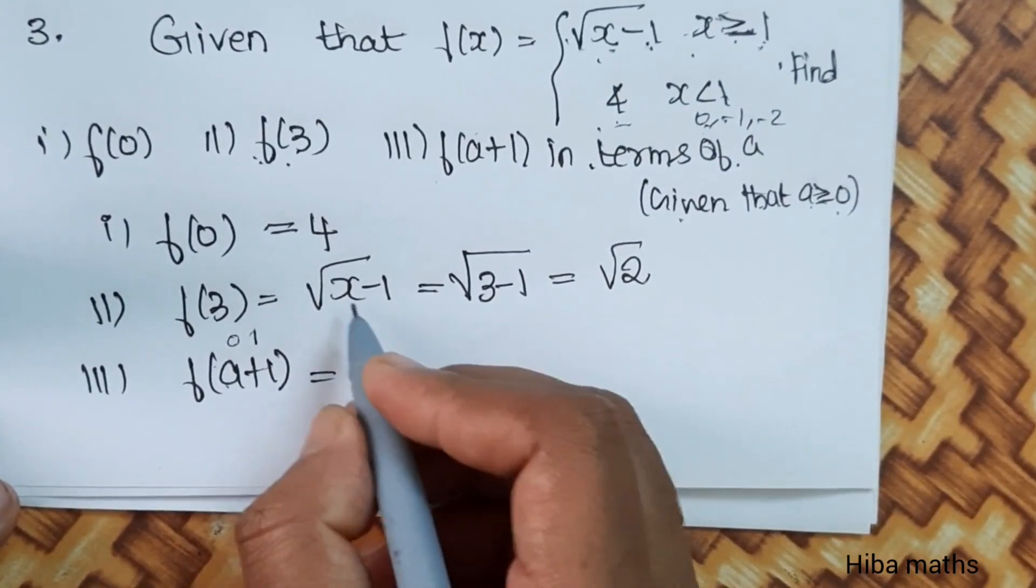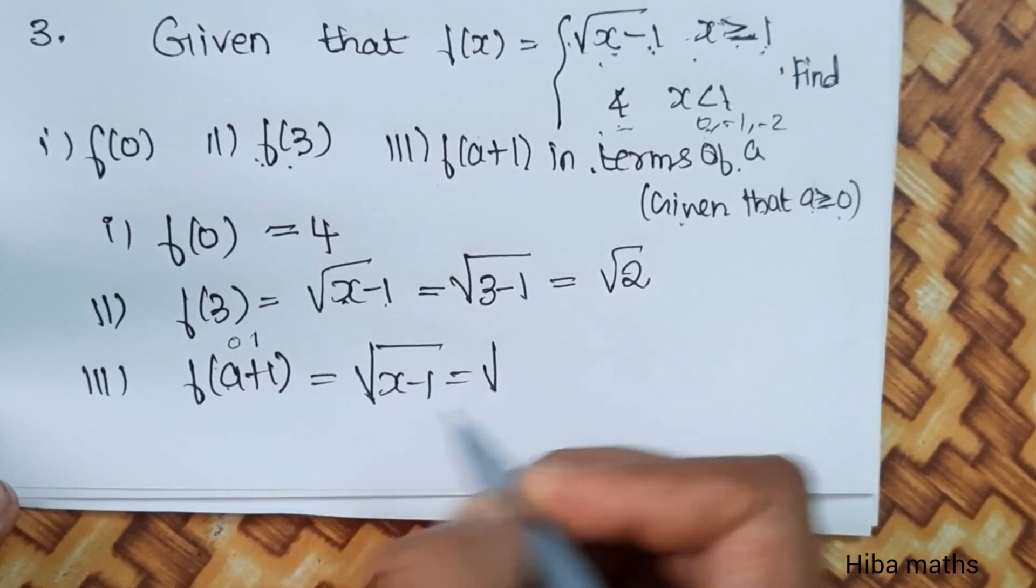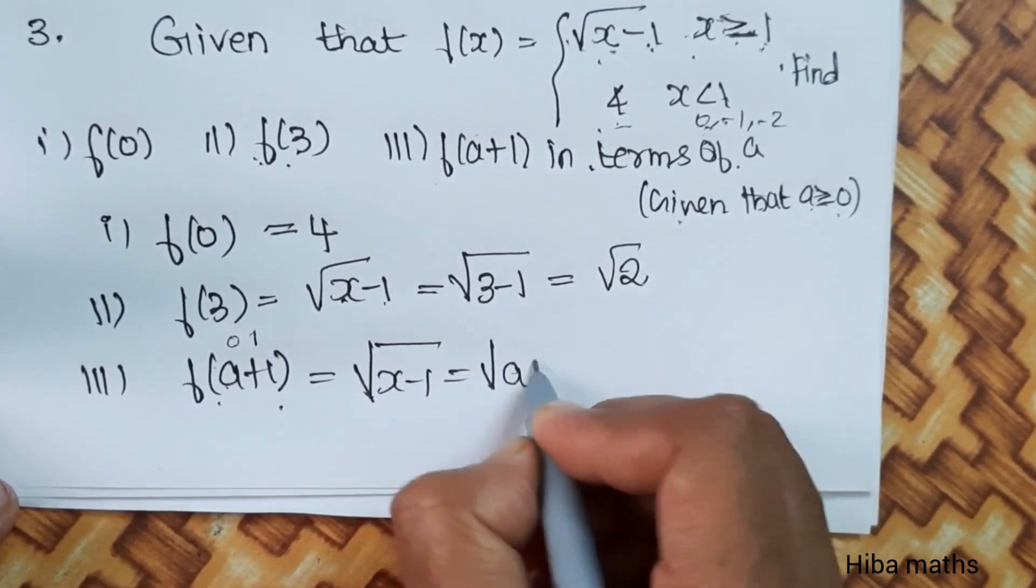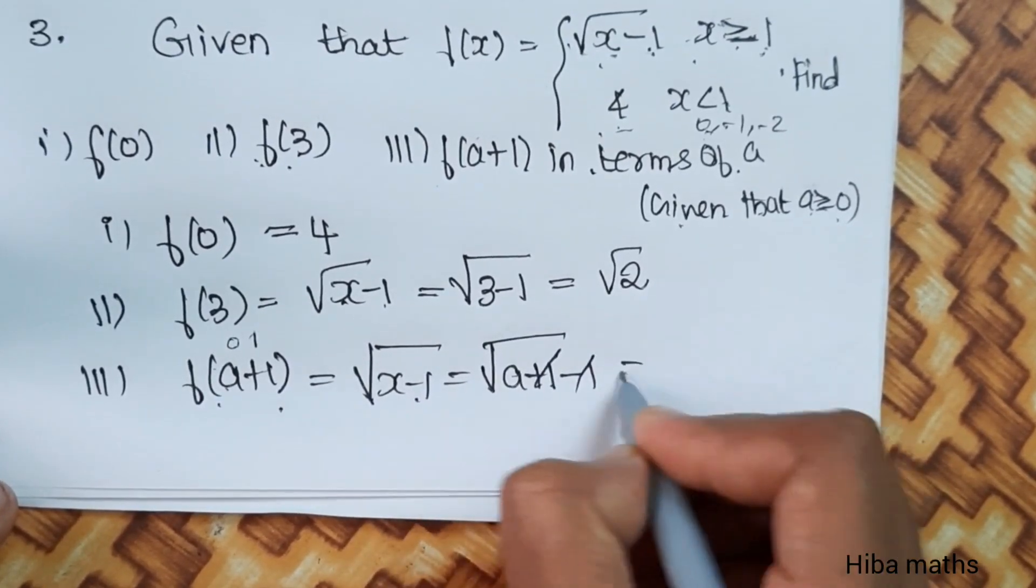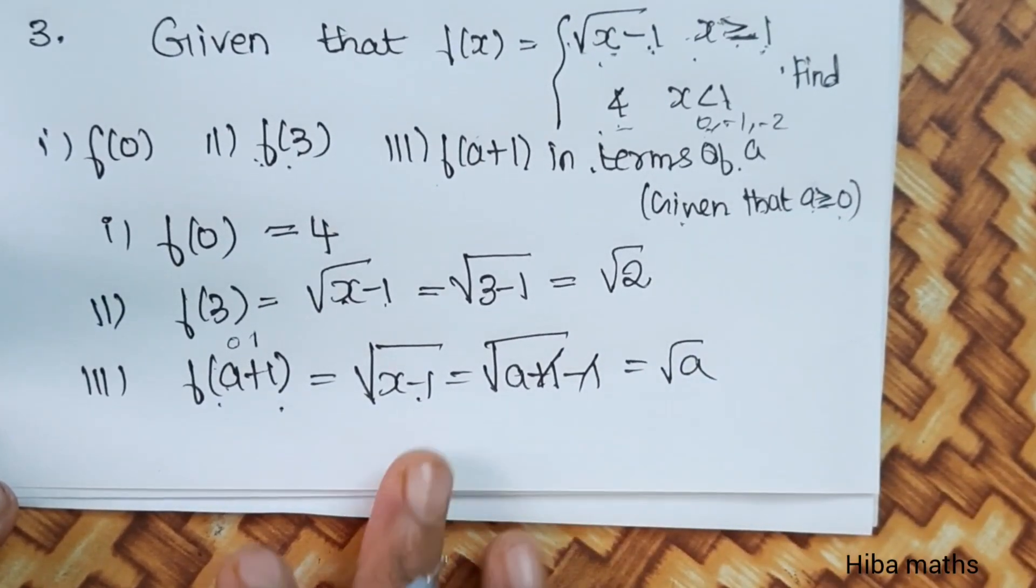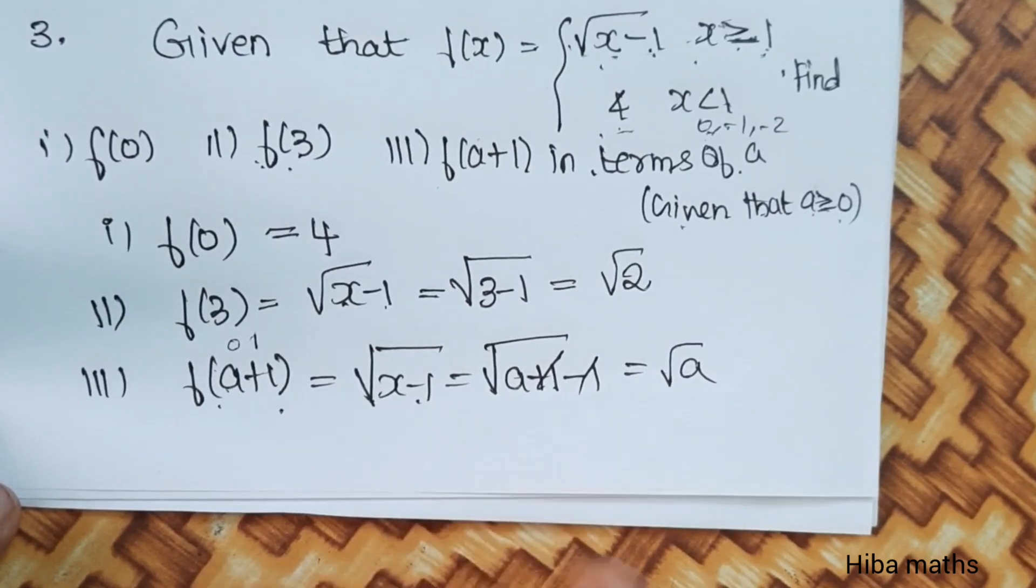Root of x minus 1, where x is greater than or equal to 1. So root of x minus 1, where x equals a plus 1. It's already minus 1, so a plus 1 minus 1. The answer is root a. Thank you so much for watching.